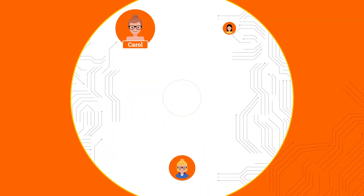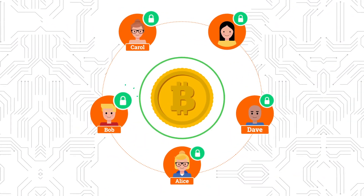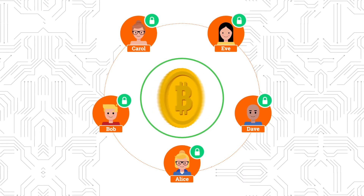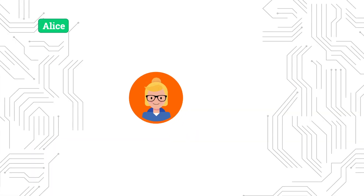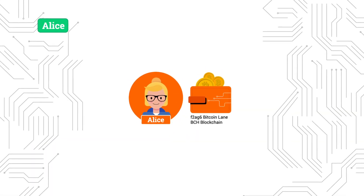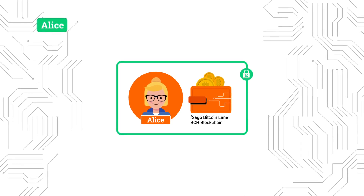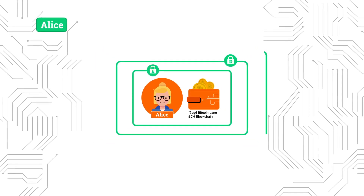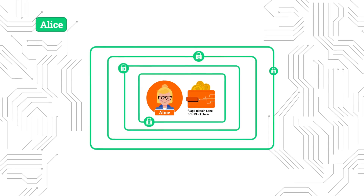Alice, Bob, Carol, Dave, and Eve are shuffling their coins. Alice encrypts her secret Bitcoin address using encryption keys provided by all of the other shufflers — first Eve's, then Dave's, then Carol's, and finally Bob's.